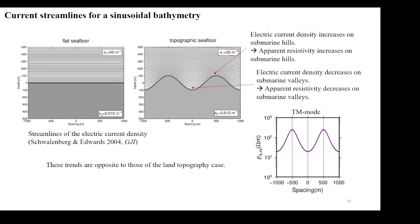This shows the streamlines of electric current density within the sea. Electric current density is relatively large on submarine hills, so apparent resistivity becomes large on submarine hills. On the other hand, electric current density is relatively small on submarine valleys, so apparent resistivity becomes small there. These trends are opposite to those of the land topography case.